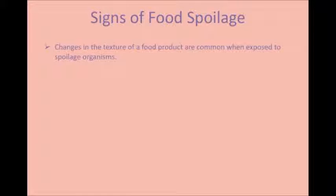Changes in the texture of a food product are common when exposed to spoilage organisms. In fruits, a slimy texture indicates that bacteria are present and have begun to produce carbohydrates. Another example would be soft vegetables, which is caused by the breakdown of cellulose by microorganisms.